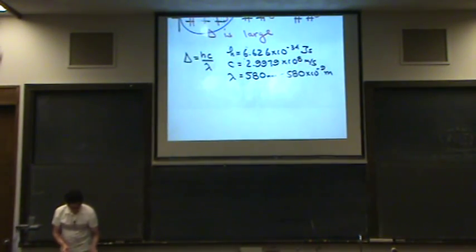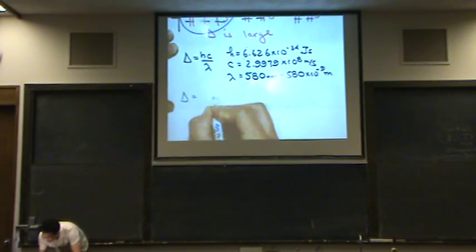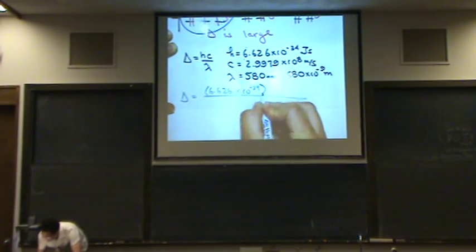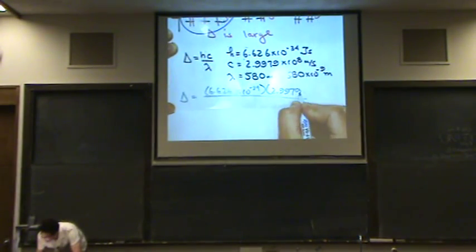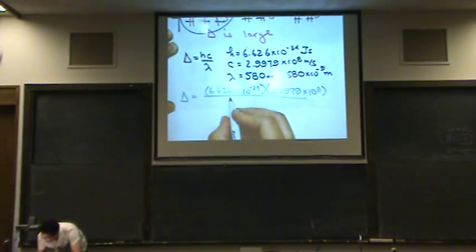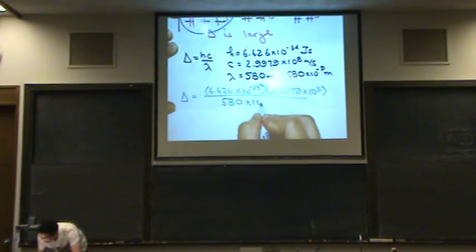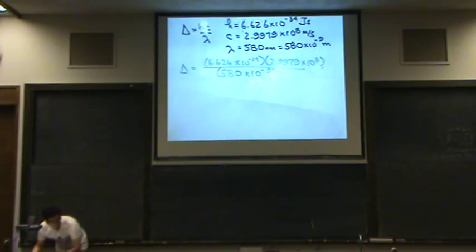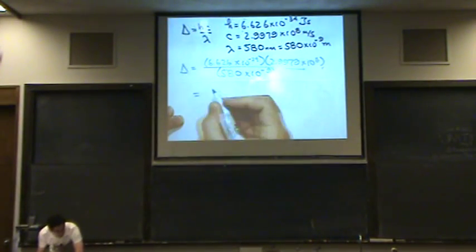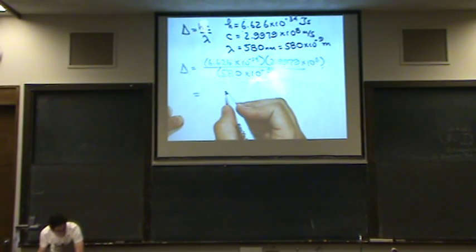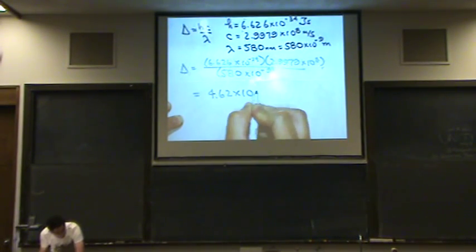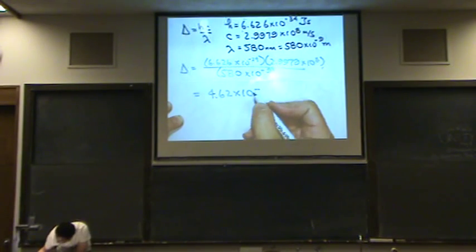Okay, so how do you find delta? We just plug it in to the formula. Delta is equal to 6.626 times 10 to the minus 34. That's H. C is 2.9979 times 10 to the eighth. And lambda is 580 times 10 to the minus 9 meters. It turns out that delta is 4.62 times 10 to the minus, I think it says 19.